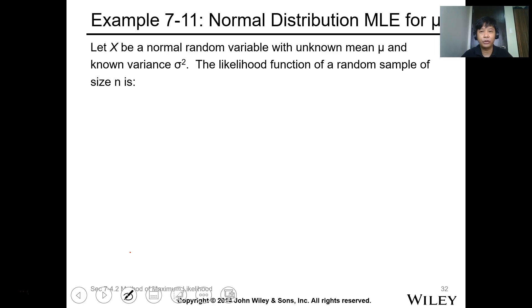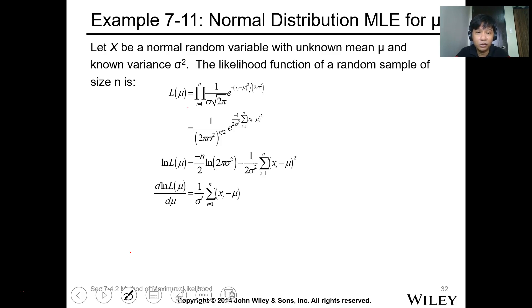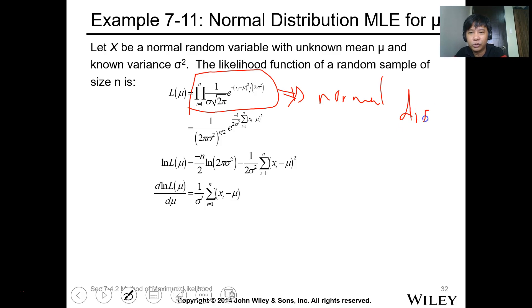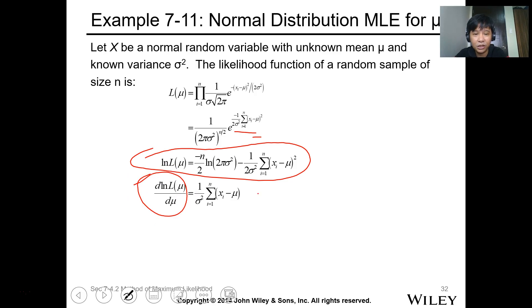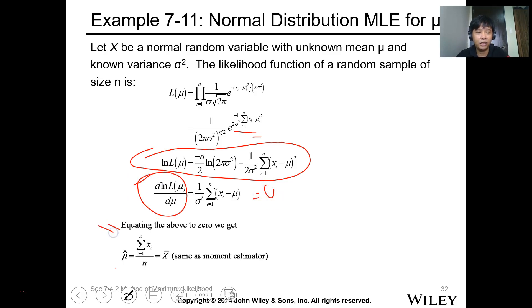For example 7-11, the normal distribution MLE for mu: let x be a normal random variable with unknown mean mu and known variance sigma². The likelihood function for a random sample of size n uses the normal distribution function. Since it involves an exponential, we take the natural log to get the log-likelihood, apply summation, take the first derivative, and set it equal to zero. The MLE estimate of the mean is just the sample mean x-bar — the same as the moment estimator.